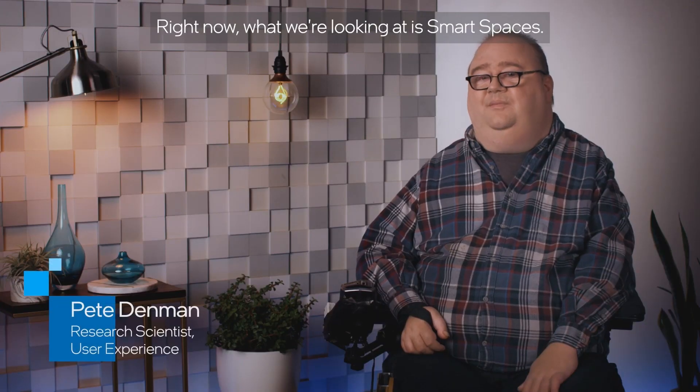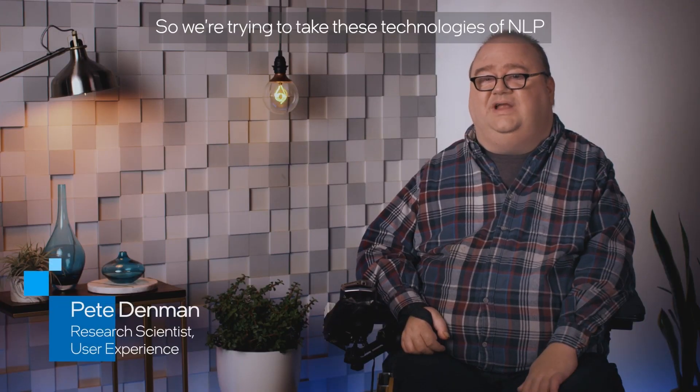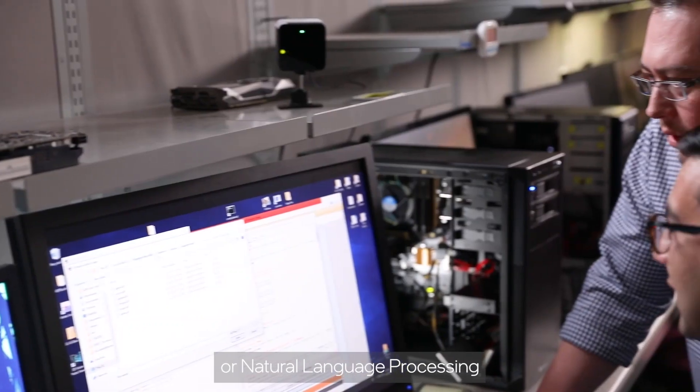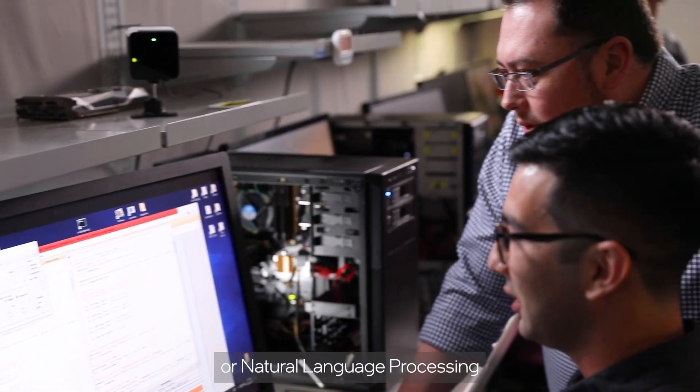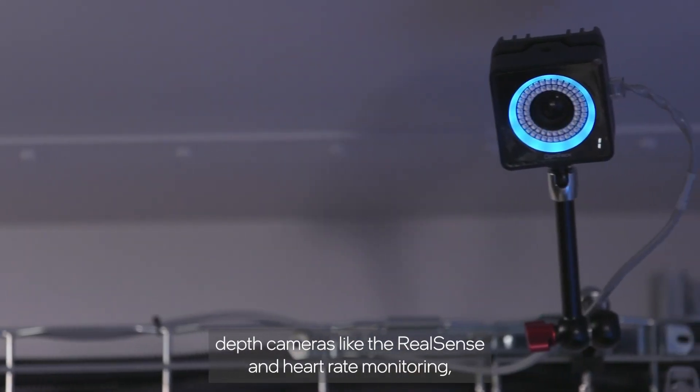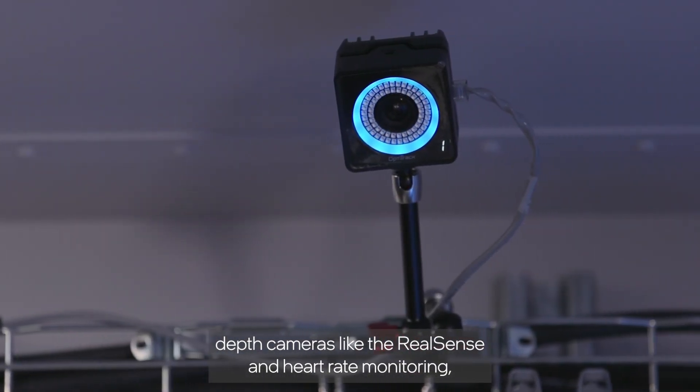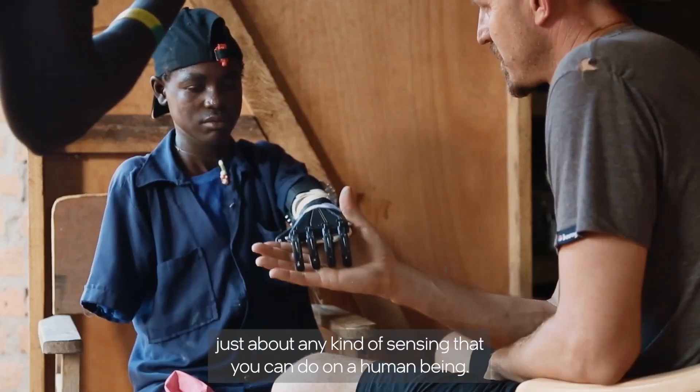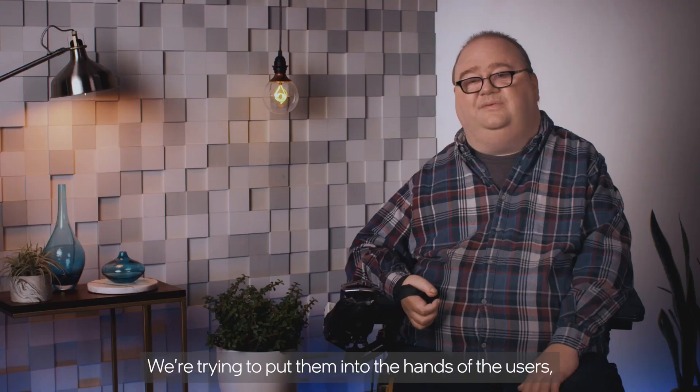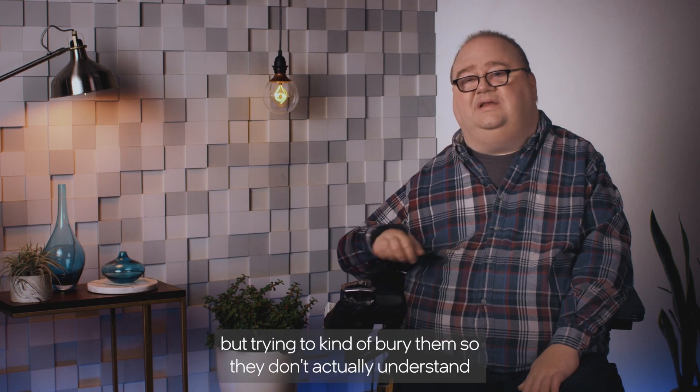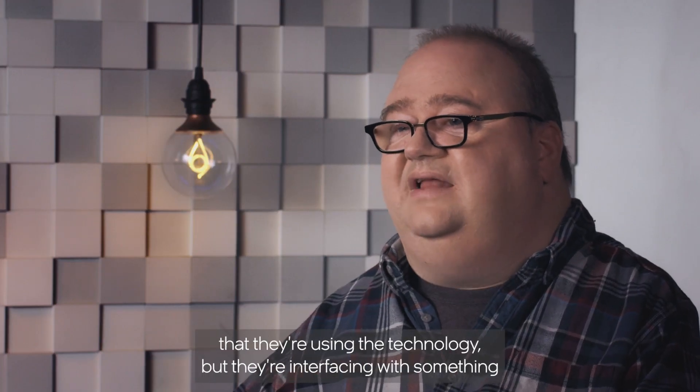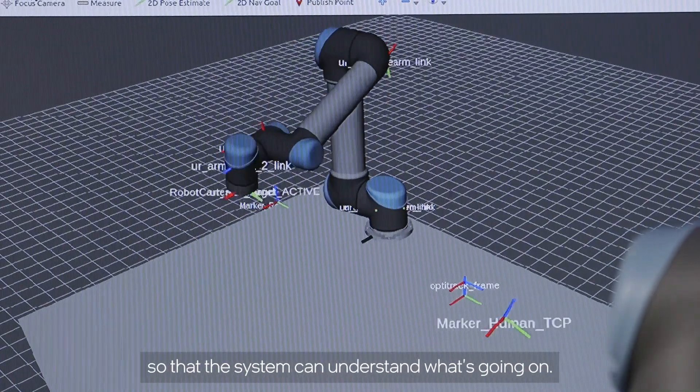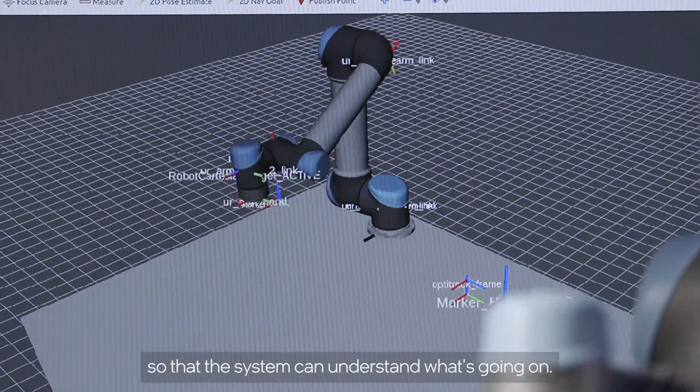Right now what we're looking at is smart spaces. We're trying to take these technologies of NLP or natural language processing, depth cameras like the RealSense, and heart rate monitoring—just about any kind of sensing that you can do on a human being. We're trying to put them into the hands of users but trying to kind of bury them so they don't actually understand that they're using the technology, but they're interfacing with something so that the system can understand what's going on.